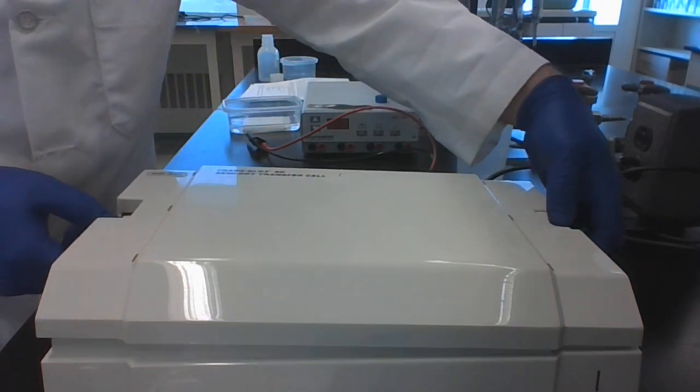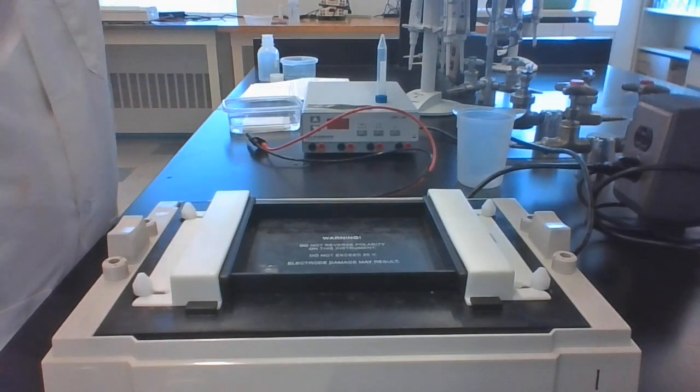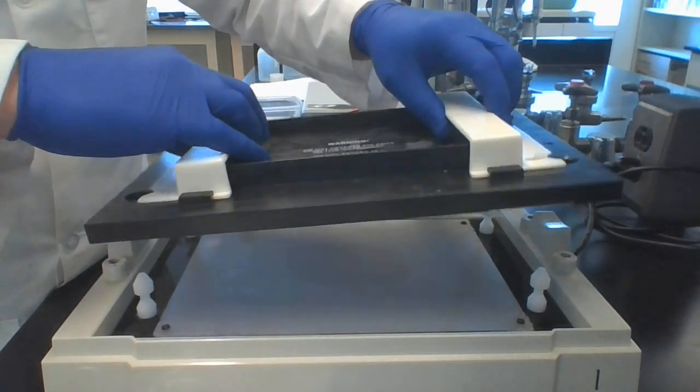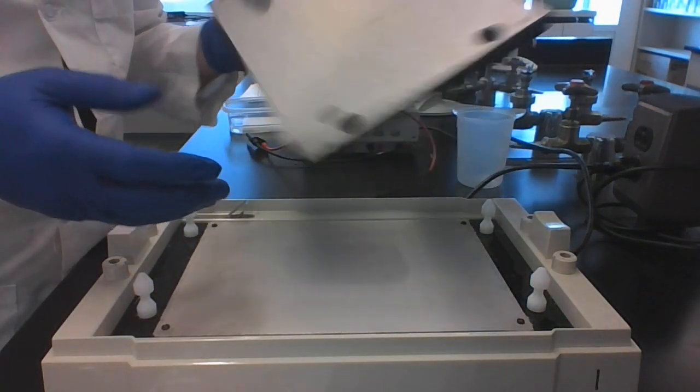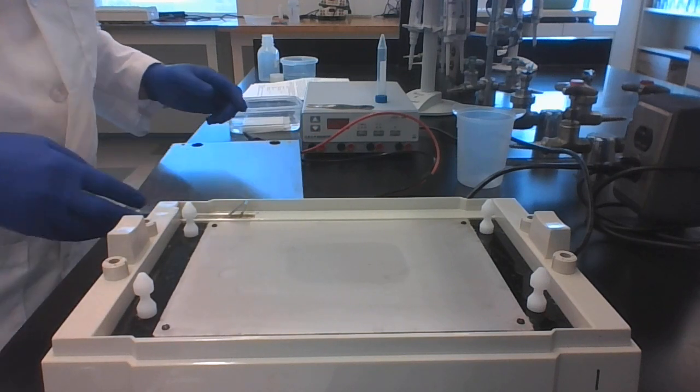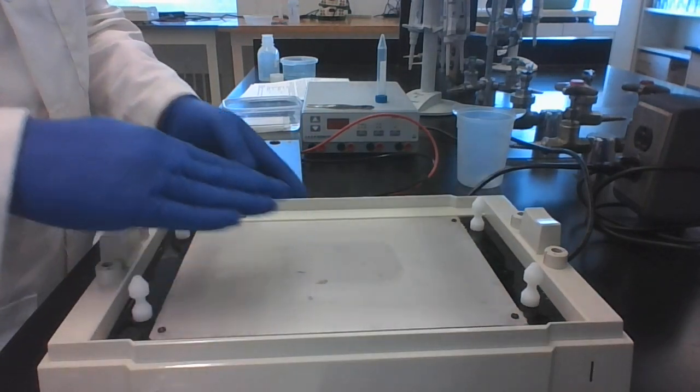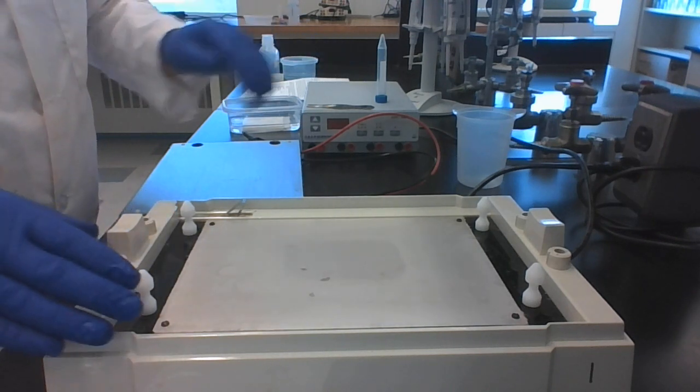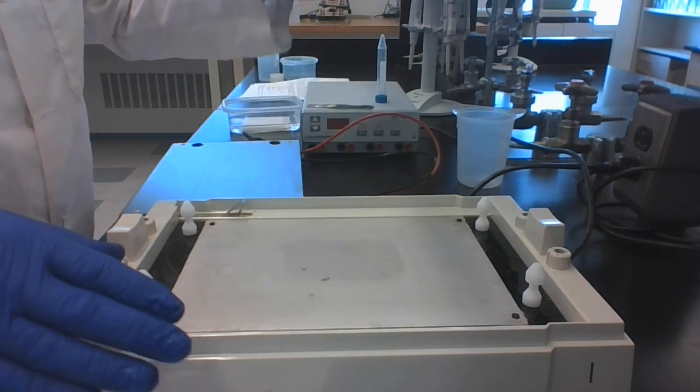So we have one lid we take off, we just set it in a nice safe place. Then we have our negative electrode, which we take off, and we have our positive electrode. So the proteins are going to move from the top down through the gel and onto the membrane.